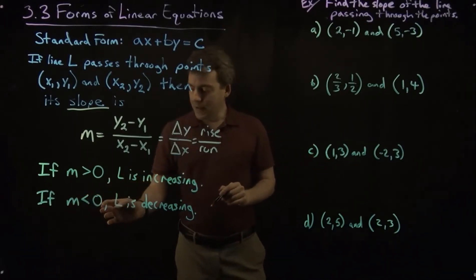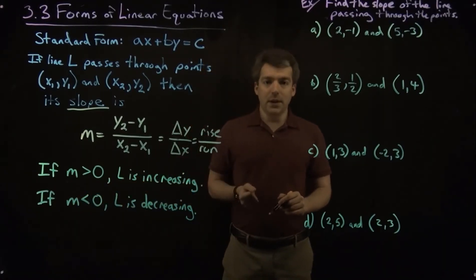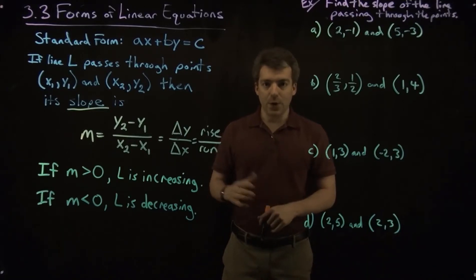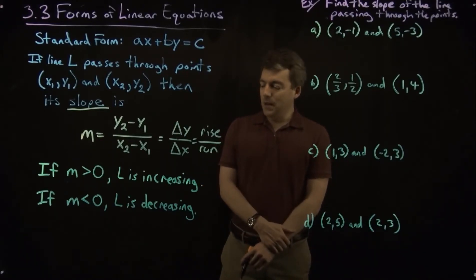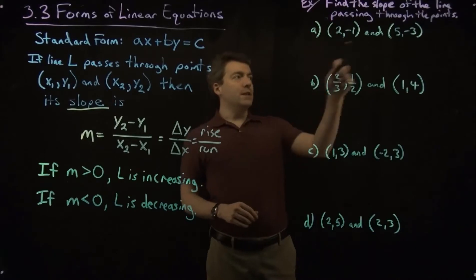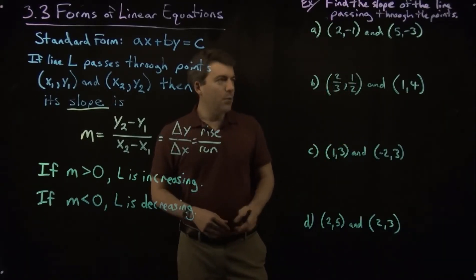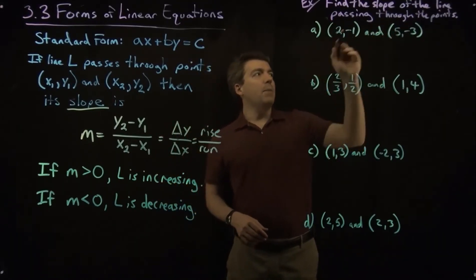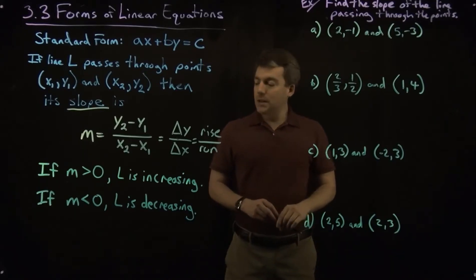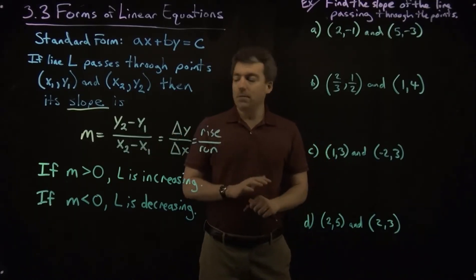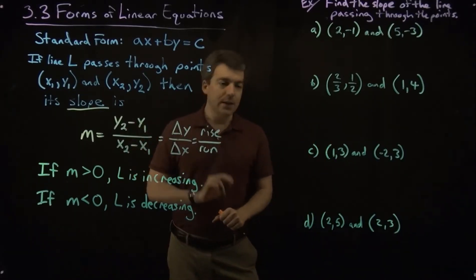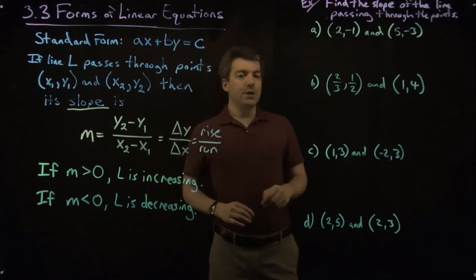If m is less than zero, L will be decreasing. So if you've got a negative number for your slope, the line will be decreasing. All right, we've got a set of points here. And we're going to find the slope of the line passing through these points using this formula. So change in y over change in x. Let's take a look at the first example.